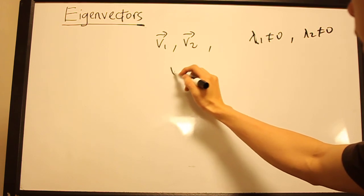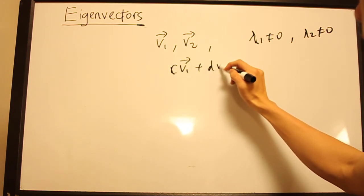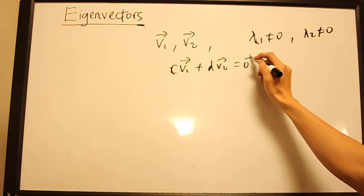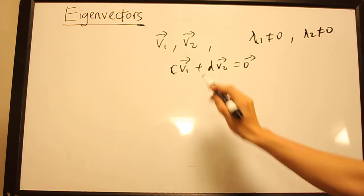We assume that C·V₁ plus D·V₂ equals 0. So we want to prove that they are linearly independent, which means that we want to prove that C and D must be 0.